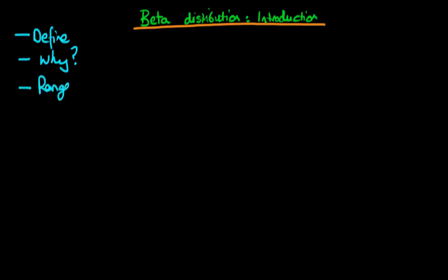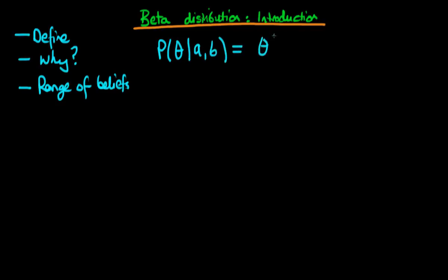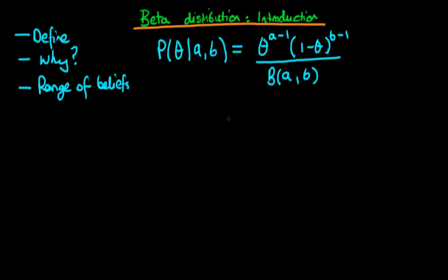Finally, we're going to talk about the range of beliefs which we can specify by varying the parameters of our beta distribution. Starting with the definition: it's a distribution defined in terms of a variable theta. It's a continuous distribution which is a function of two parameters, a and b, and it's of the form theta to the power a minus one, times one minus theta to the power b minus one, all divided through by a normalization constant — the beta function of a and b. The denominator is not a function of theta; it's just a normalization constant ensuring the probability distribution integrates to one. So we can think of this distribution as being proportional to theta to the power a minus one times one minus theta to the power b minus one.